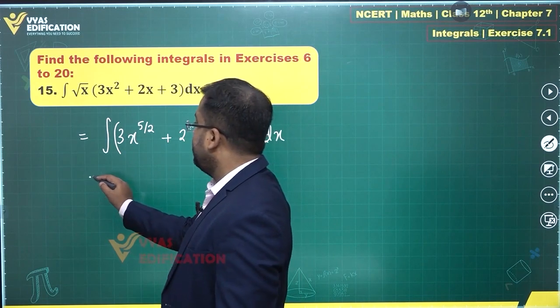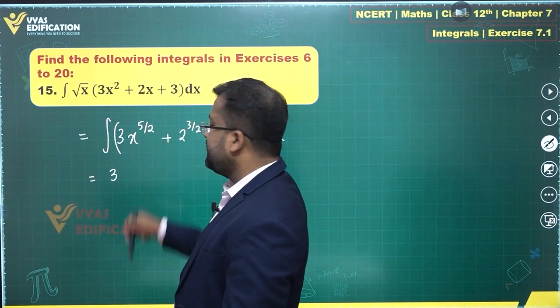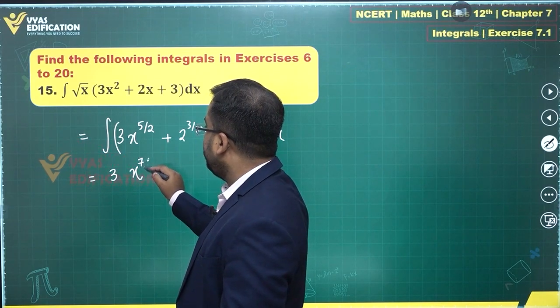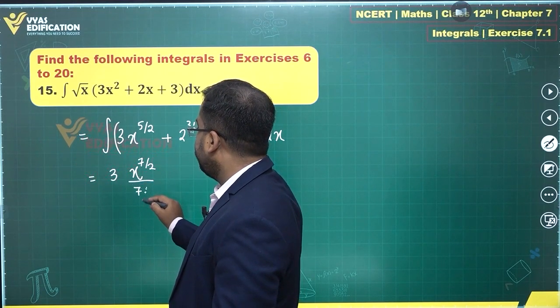This is what I'll get. I can separate out the terms and see where does that take me. This is 3 times integral of x power 5/2. What is integral of x power 5/2? This is x power 7/2 upon 7/2.